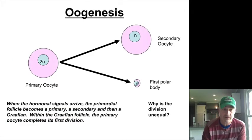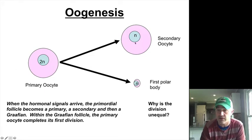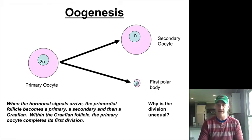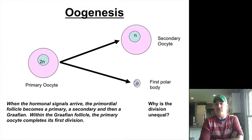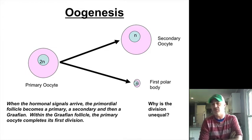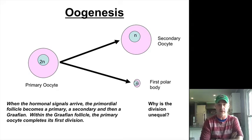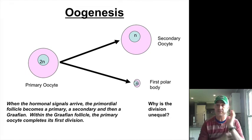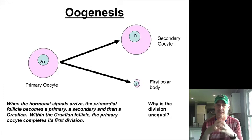In puberty, with each monthly cycle, we're going to take this primary oocyte and get it to a secondary oocyte. It generates what's called a polar body. Unlike the males, a primary oocyte is going to lead to one functional oocyte instead of a primary spermatocyte leading to four functional spermatozoa. This is mainly because early on in development, a lot of the cellular division is taking place without a lot of growth in that zygote or embryo.